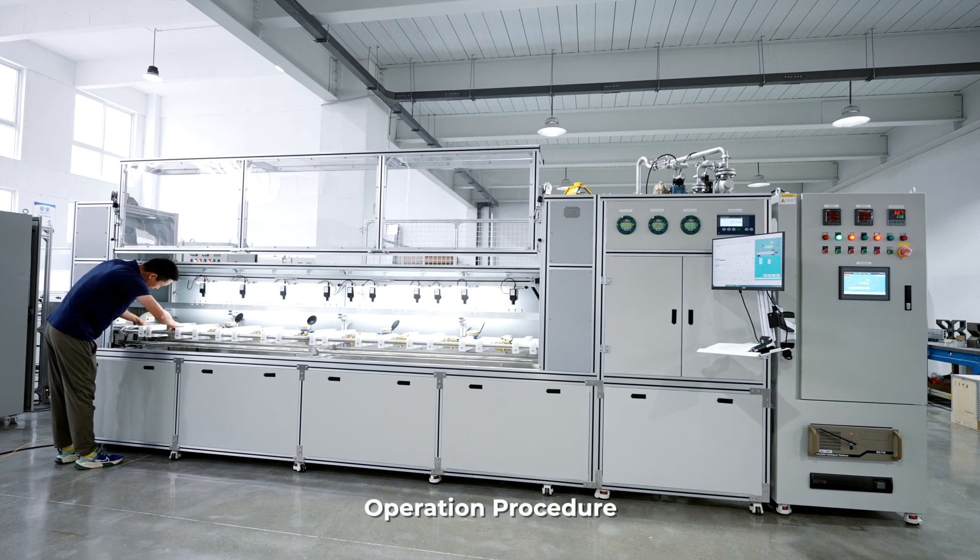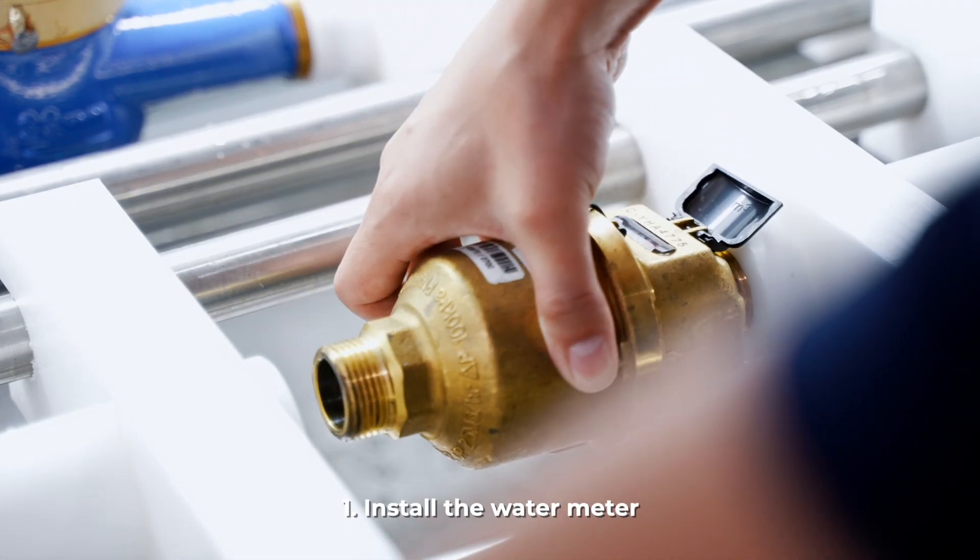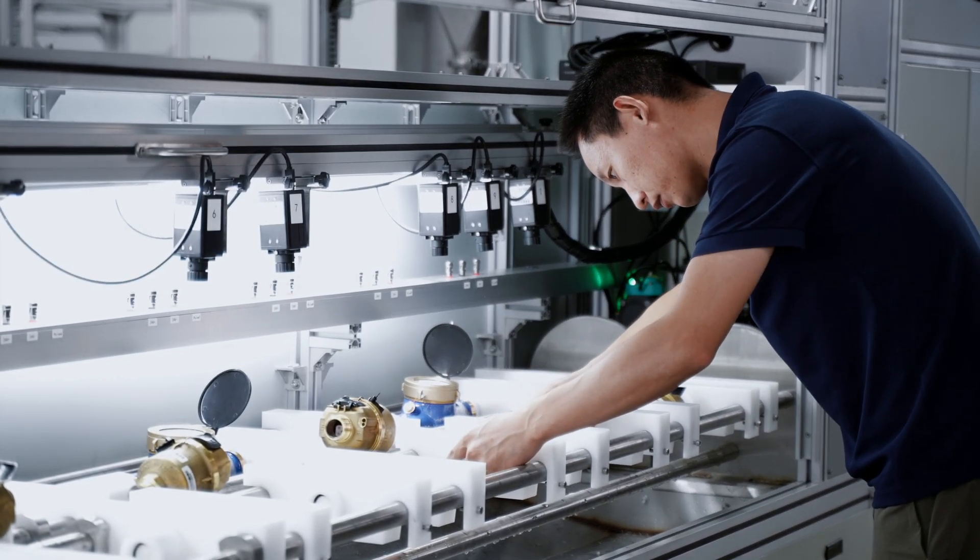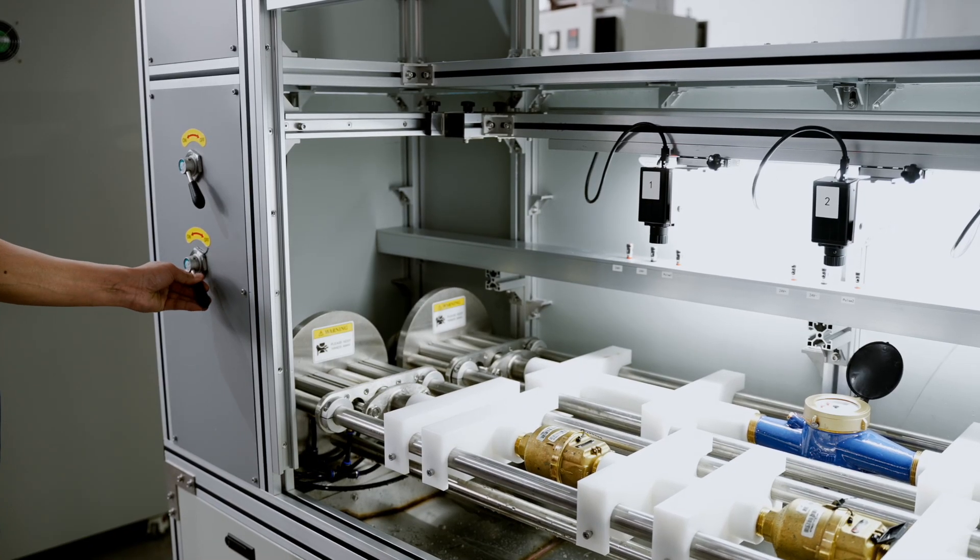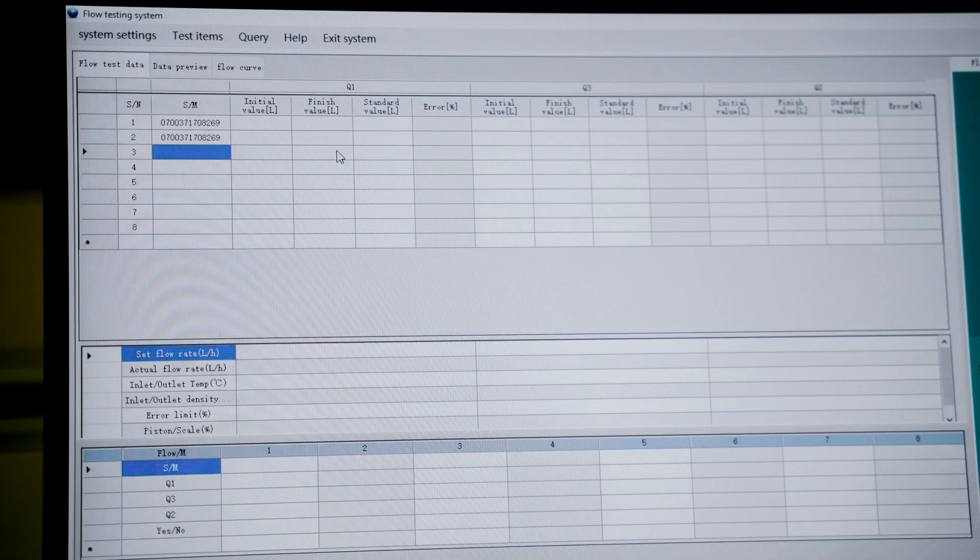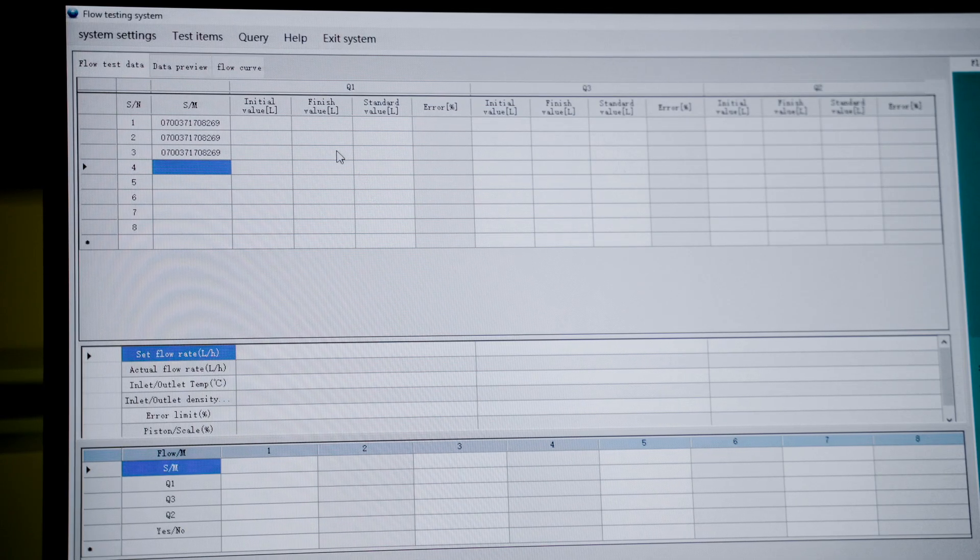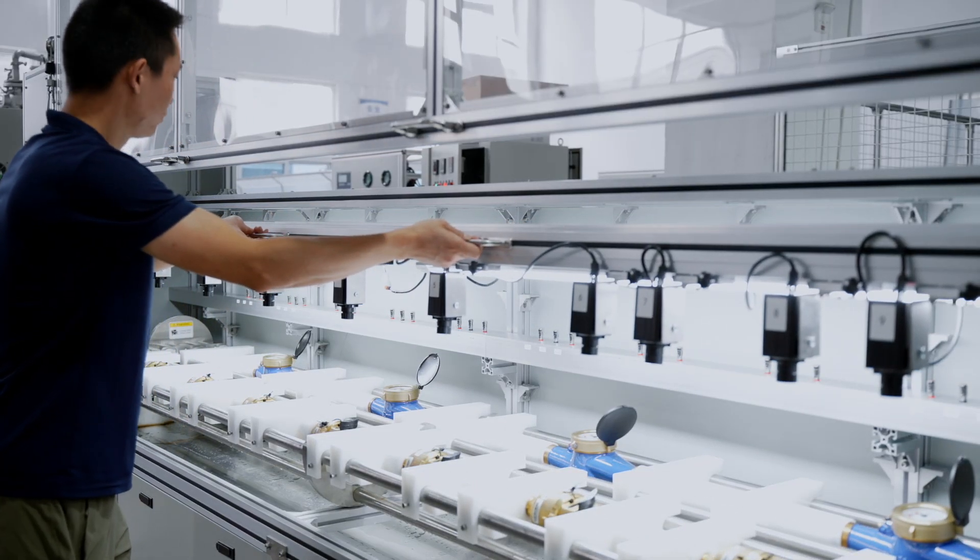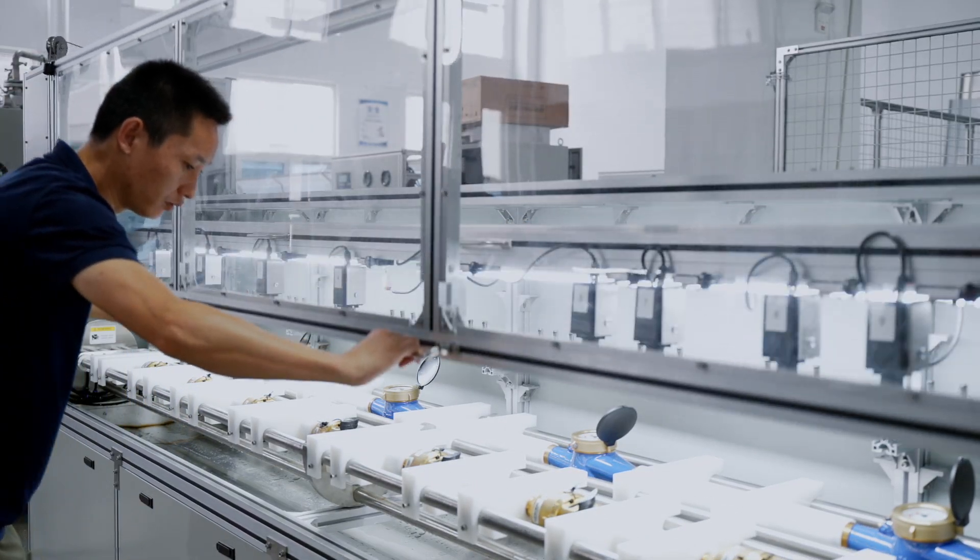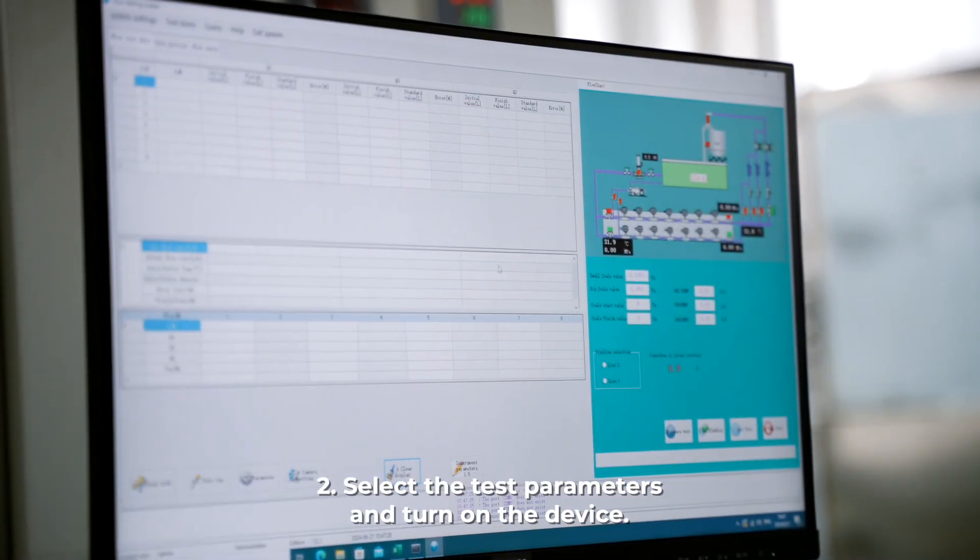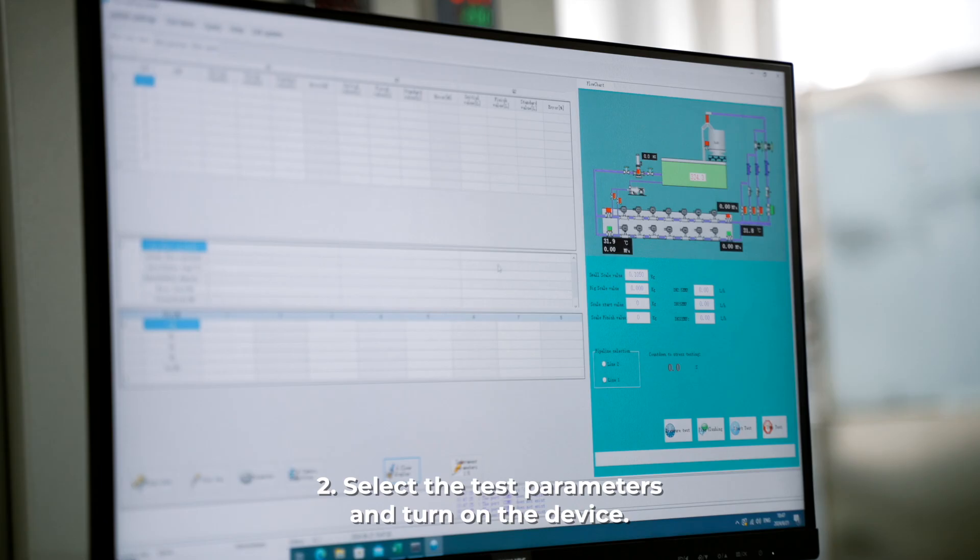Operation Procedure: 1. Install the Water Meter, 2. Select the Test Parameters and Turn on the Device